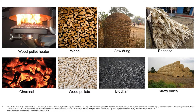Biomass is any organic material which has stored sunlight in the form of chemical energy. As a fuel, it may include wood, wood waste, straw and other crop residues, manure, sugarcane, and many other by-products from a variety of agriculture processes. Manure, garden waste, and crop residues are all sources of biomass. Biomass makes a renewable energy source based on the carbon cycle, unlike other natural resources such as petroleum, coal, and nuclear fuels. Another source includes animal waste, which is a persistent and unavoidable pollutant produced primarily by animals housed in industrial-size farms.